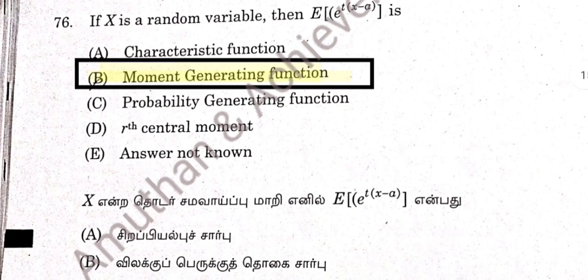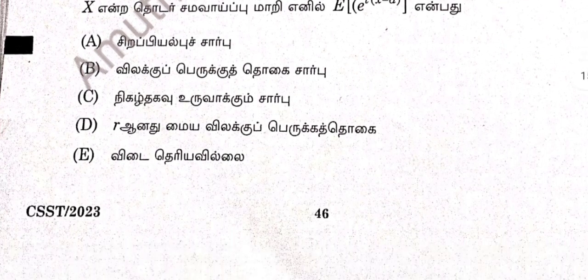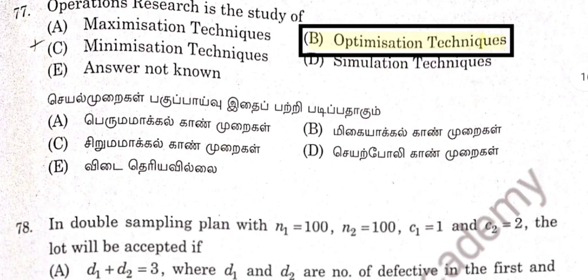Question 76: This is a moment generating function. The expectation V, power T into x minus a. MGF operation — study of optimization technique. 77 option B is correct answer.